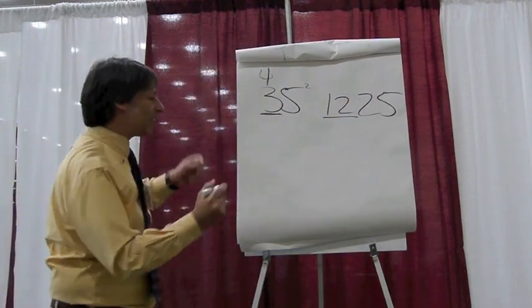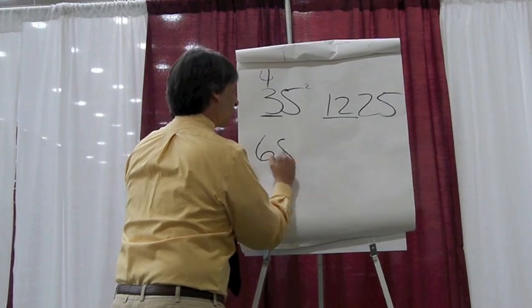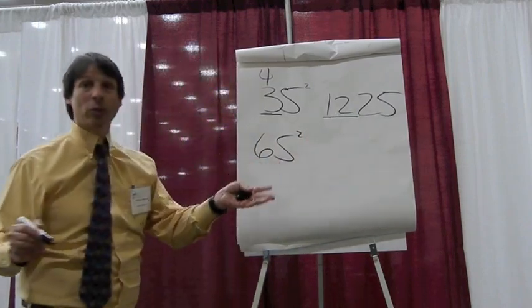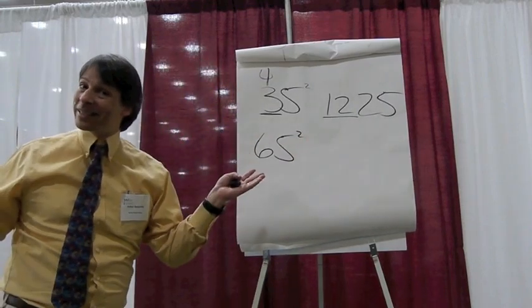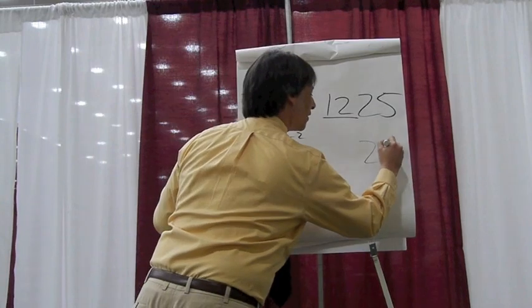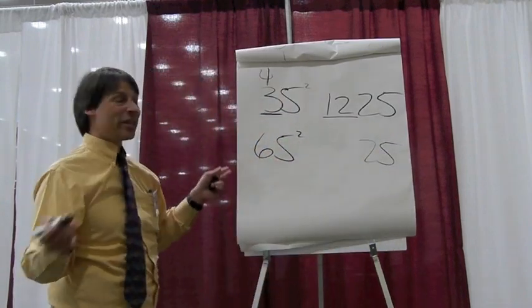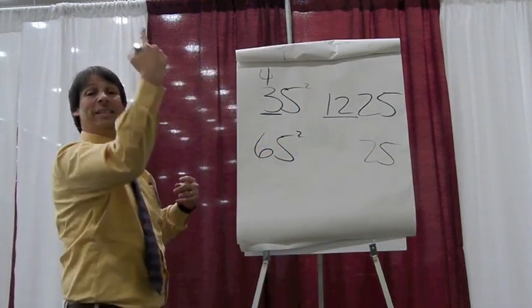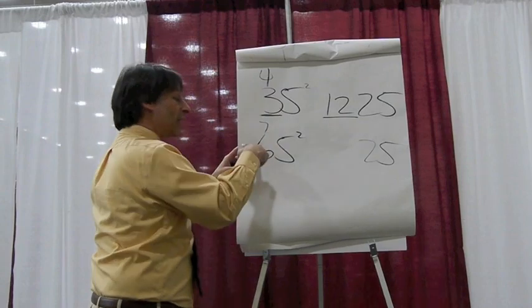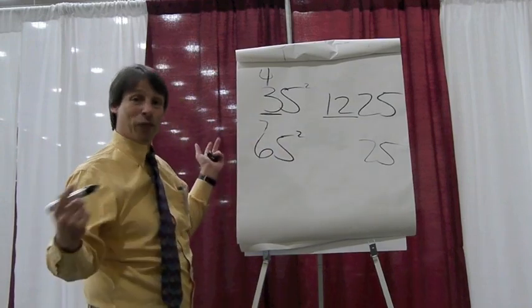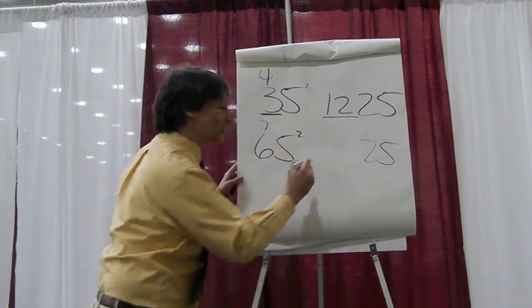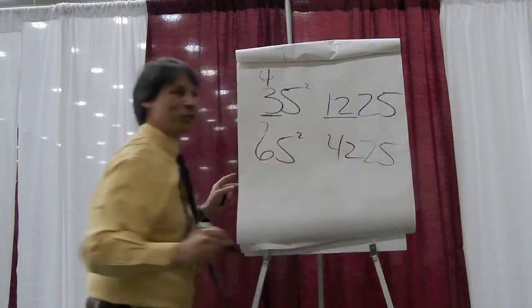You try it. Let's say 65 squared. The answer will always end in 25, and it begins with 6 times 7, the next higher number. 6 times 7 is 42, so there's the answer, 4225.